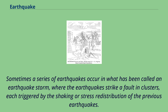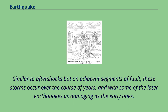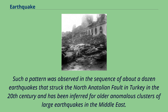Sometimes a series of earthquakes occur in what has been called an earthquake storm, where earthquakes strike a fault in clusters, each triggered by the shaking or stress redistribution of the previous earthquakes. Similar to aftershocks but on adjacent segments of fault, these storms occur over the course of years, with some of the later earthquakes as damaging as the early ones. Such a pattern was observed in the sequence of about a dozen earthquakes that struck the North Anatolian Fault in Turkey in the 20th century.